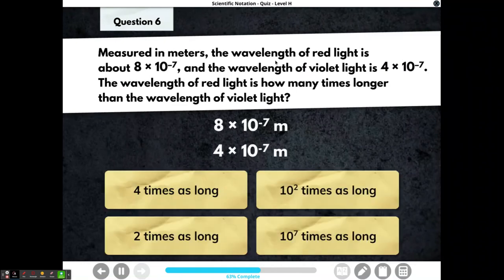Measured in meters, the wavelength of red light is about eight times ten to the negative seventh, and the wavelength of violet light is four times ten to the negative seventh. The wavelength of red light is how many times longer than the wavelength of violet light?